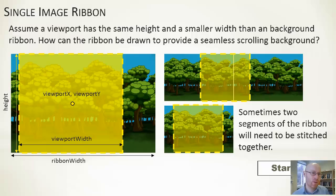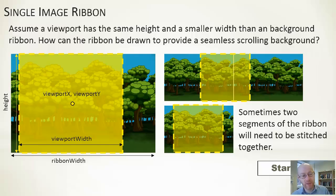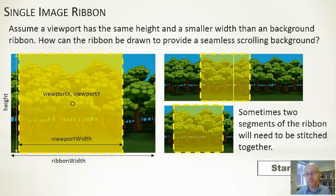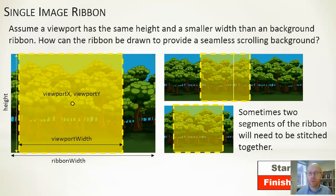So the question to think about is: how can the ribbon be drawn to provide a seamless scrolling background, given that we have a viewport X and Y center, a viewport width, and a ribbon width, with matching heights? Think about how you'd draw these images out — take ten minutes to ponder and come back with a solution.